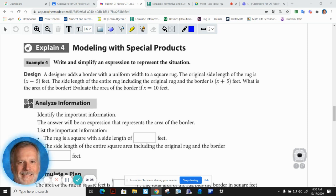We've been talking about the special products, those being a perfect square trinomial and a difference of squares. Well, look at how those types of special products might be modeled.